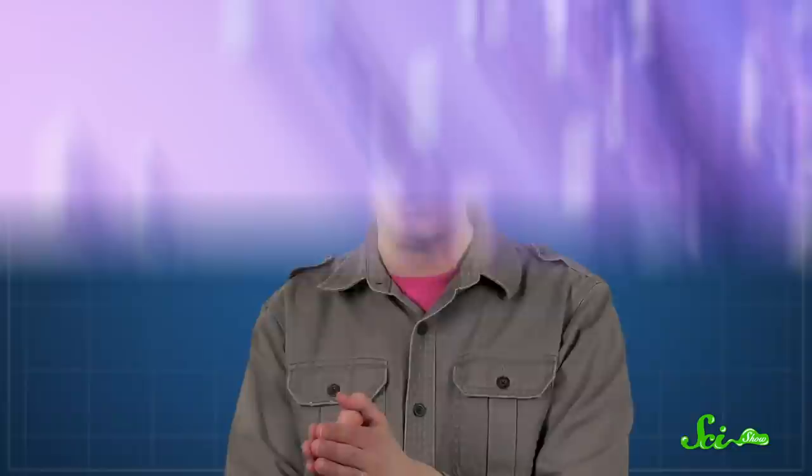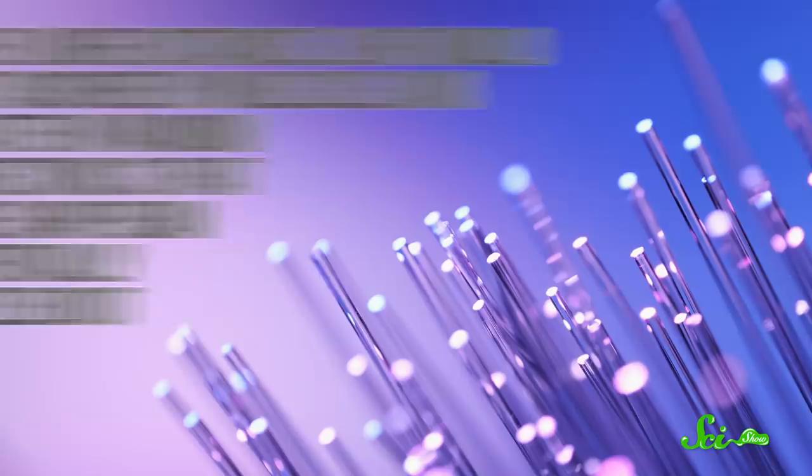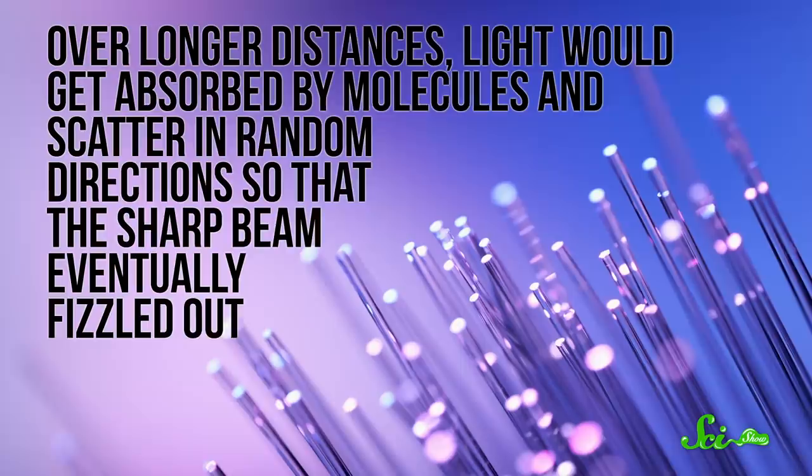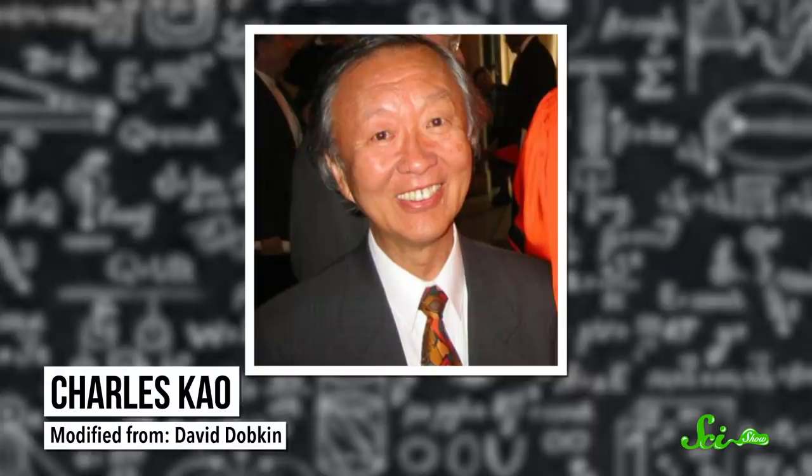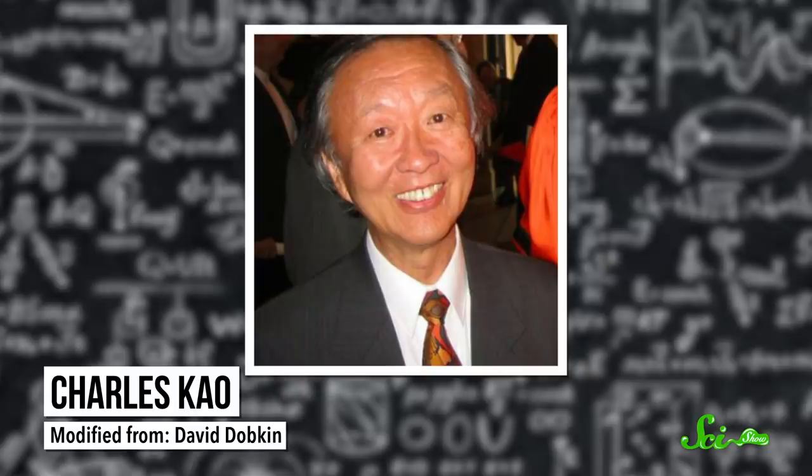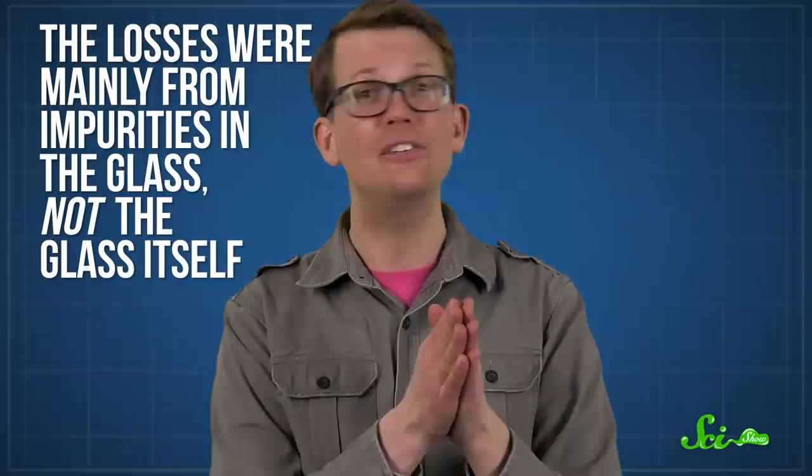Now, at this point, the technology was still only reliable across short distances. Over longer distances, light would get absorbed by molecules and scatter in random directions, so that the sharp beam eventually fizzled out. But in the 60s, the physicist Charles Gow finally figured out the key to making fiber-optic cables reliable over long distances. He realized that the losses were mainly from impurities in the glass, not the glass itself. So by making purer glass, he could reduce losses.